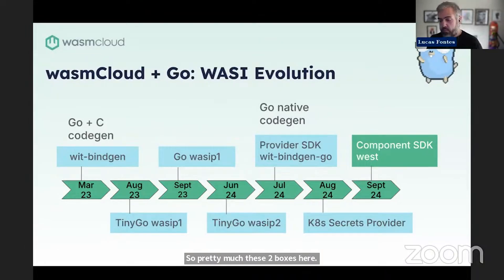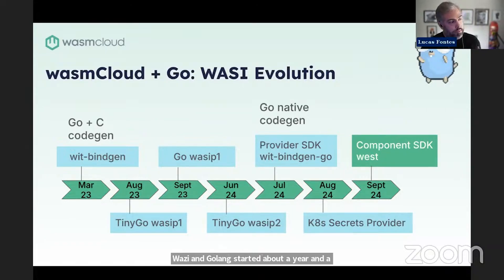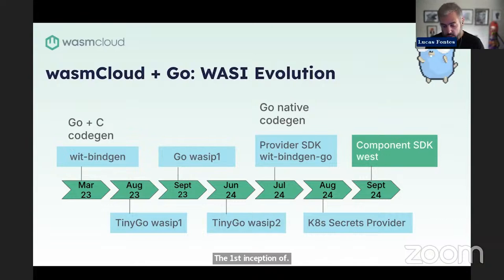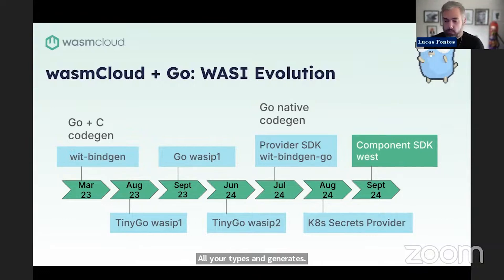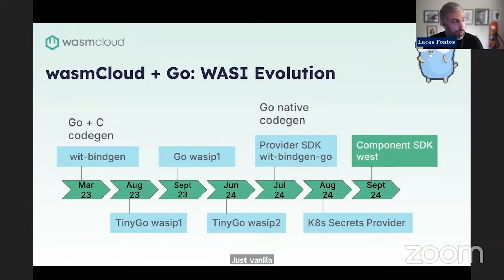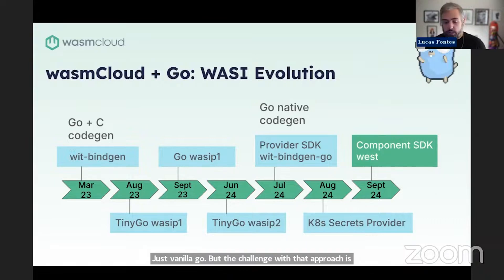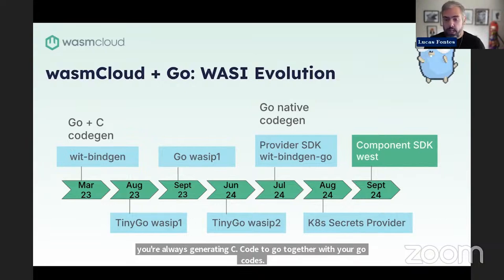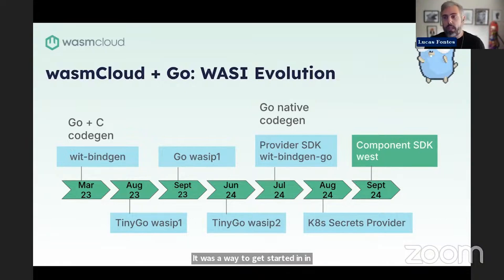The story between WASM and Golang started about a year and a half ago with the first inception of WitBindGen. What this was: it takes your WIT interface, all your types, and generates Go code so you can write your servers and microservices using just vanilla Go. But the challenge with that approach is you always generate C code to go together with your Go code. It was a way to get started in the ecosystem, but we knew from the beginning it was not sustainable.